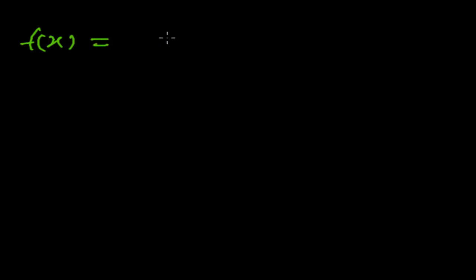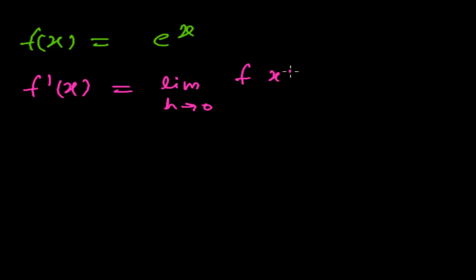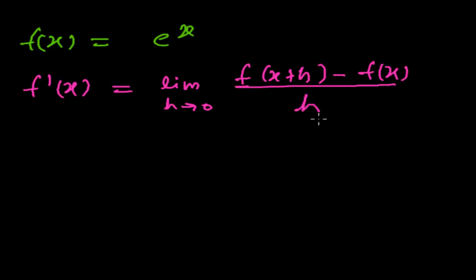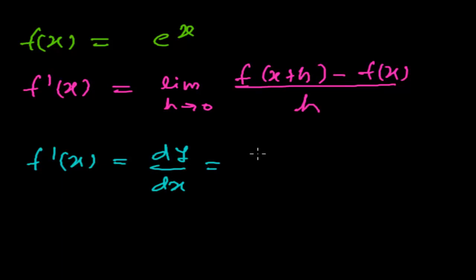So our function f of x is equals to e to the power x. Now, what we learned in the previous video is that the derivative of f of x is equals to the limit when h tends to 0 of f of x plus h minus f of x, whole divided by h. I'm applying this formula here. The derivative can also be written as dy by dx, or as d[f(x)]/dx — whichever form you like, just write one.